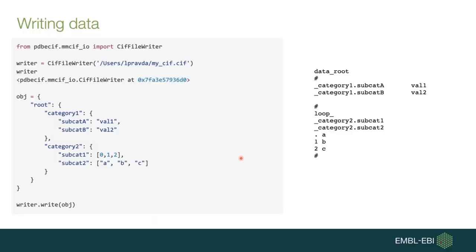Last but not least, PDBE-SIF also allows you to write out mmCIF files by importing the SifFileWriter object from the same namespace. Just create an instance pointing to the location where you want your mmCIF file to be saved, and call the write function with a given object. The write function accepts all the objects mentioned: a plain Python dictionary, a SifWrapper object, or a SifFile. Here on the right-hand side you can see the resulting SIF file from a plain Python dictionary example.